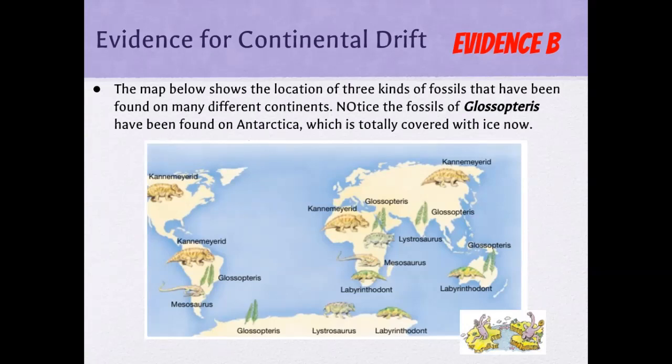There are a few more examples of different dinosaurs found on different continents. For example, the Mesosaurus is found in both South America and Africa. It makes sense that these two landforms would have been close together at some point.